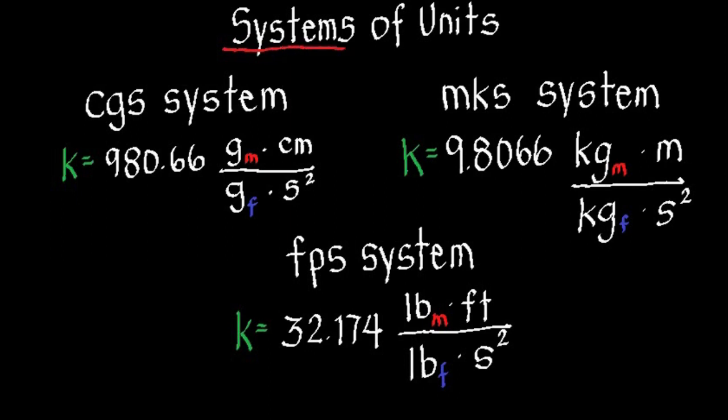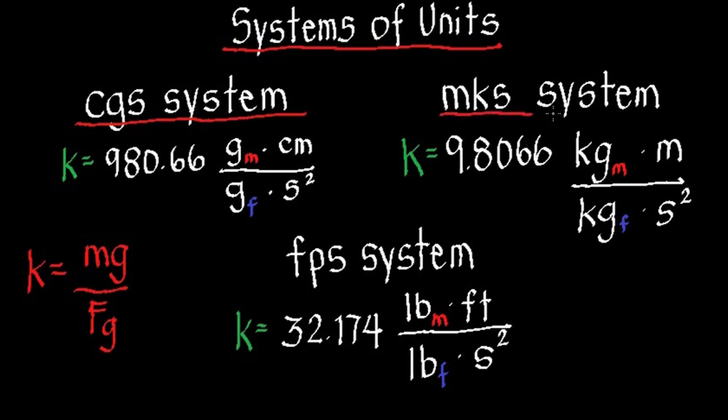A review of the systems of units. We can get the unit of k from the formula k equals mass times acceleration due to gravity over force. Using the CGS system, k is 980.66 gram mass centimeters over gram force seconds squared. Using MKS system, k is 9.8066 kilogram mass meters over kilogram force seconds squared. And in FPS system, k is 32.174 pound mass feet over pound force seconds squared.